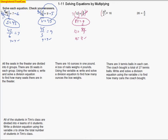Right here, again, this is division, so we're going to do the opposite — multiply to cancel out those 2s. When we multiply 16 by 2, we end up with 32. That is our answer.